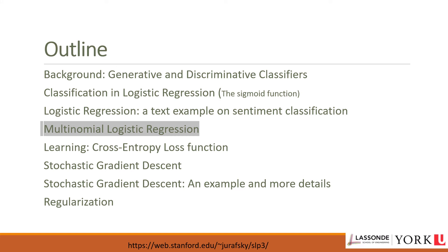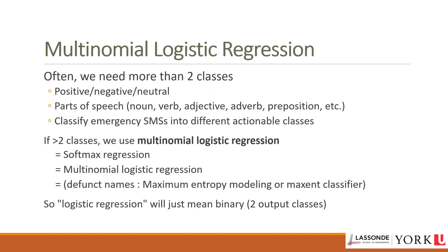Now we move from binary to multinomial logistic regression, because sometimes we need more than two classes. For example, three-way sentiment classification: positive, negative, or neutral. In such cases we use multinomial logistic regression, also called softmax regression — sometimes called MaxEnt classifier in older NLP literature. In multinomial logistic regression, we label each observation with one class k from a set of k classes, assuming only one class is correct (hard classification).